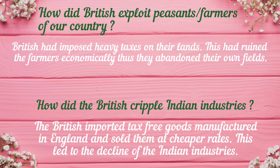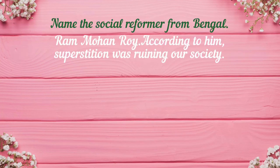How did the British damage and paralyze Indian industries? The British imported tax-free goods manufactured in England and sold them at cheaper rates. This led to the decline of Indian industries.